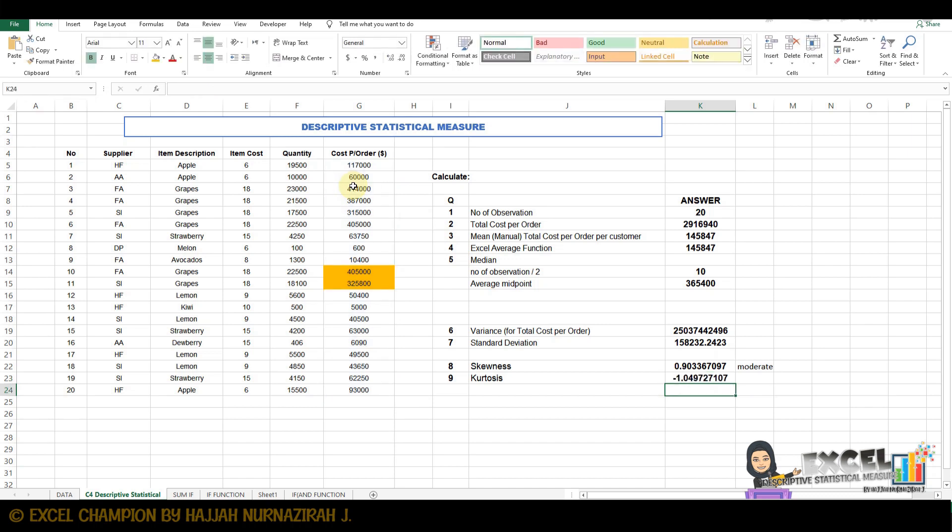The value for kurtosis is negative one, which is less than three. So it refers to platykurtic.